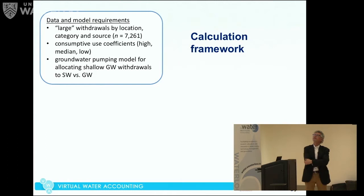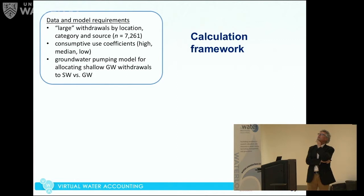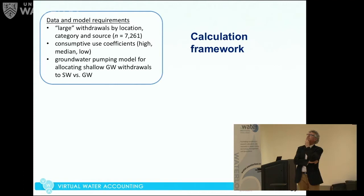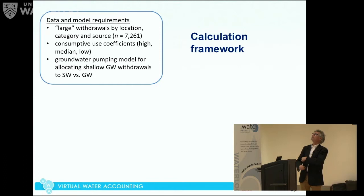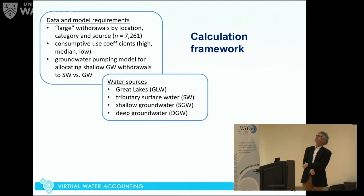Our calculation framework used withdrawal data classified as large withdrawals in the Great Lakes states, categorized by location, use category, and source. We had about 7,300 different water withdrawals obtained from all of the Great Lakes states — harmonizing this was one of the most time-consuming parts of the project. We also needed a groundwater model to allocate groundwater withdrawals from shallow aquifers between surface water and groundwater depletion.